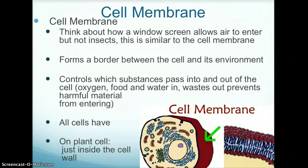The cell membrane is an organelle. It exists in both plant and animal cells. In a plant cell, it is located right inside the cell wall. The cell membrane acts like a window screen.